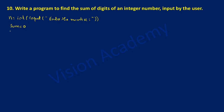Now let us write the while iterative statement. The condition is while n is greater than 0, put a colon as per the syntax of the while statement. After that we have to give indentation — a tab space — and any instructions under the influence of while should be written with indentation.